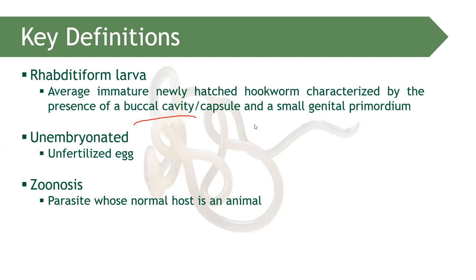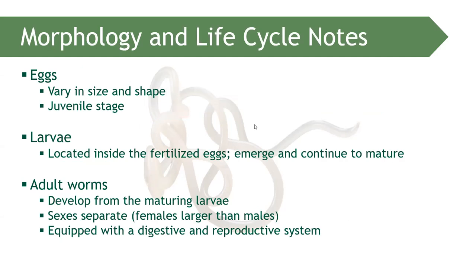Unembryonated egg means an unfertilized egg. Zoonosis refers to parasites whose normal host is an animal. The three morphological forms of our nematodes are egg, larvae, and adult. The egg is the juvenile stage, the larvae is the intermediate stage, and the adult is the mature form.